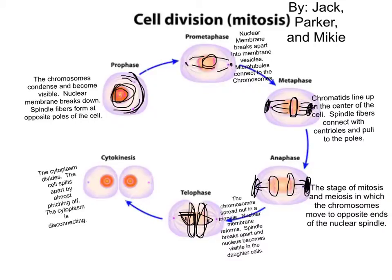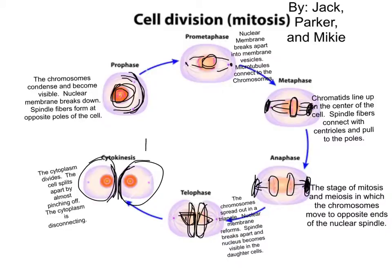The next phase, cytokinesis. Cytokinesis is the final stage of mitosis. The cytoplasm divides and the cell splits apart by almost pinching it off. The cytoplasm is disconnecting, and now you have two identical daughter cells.